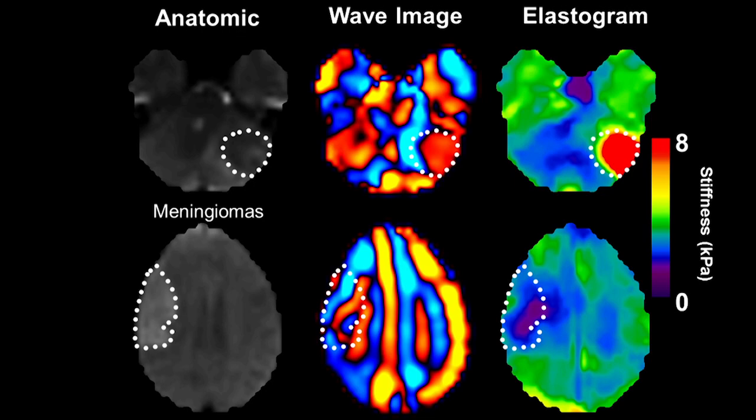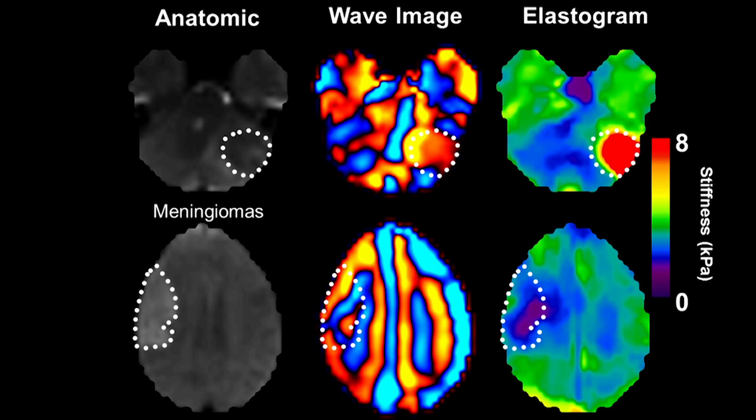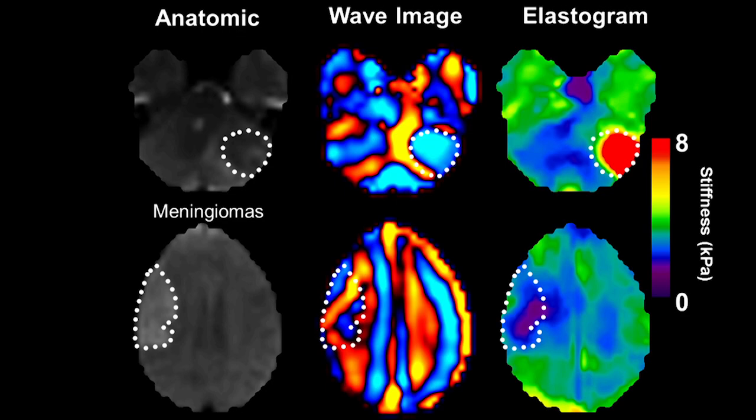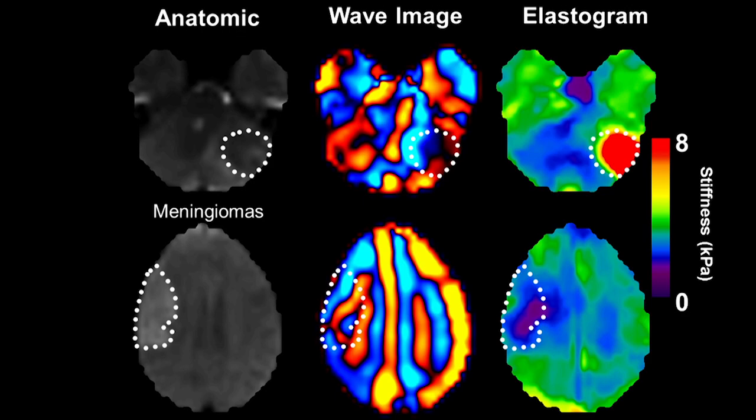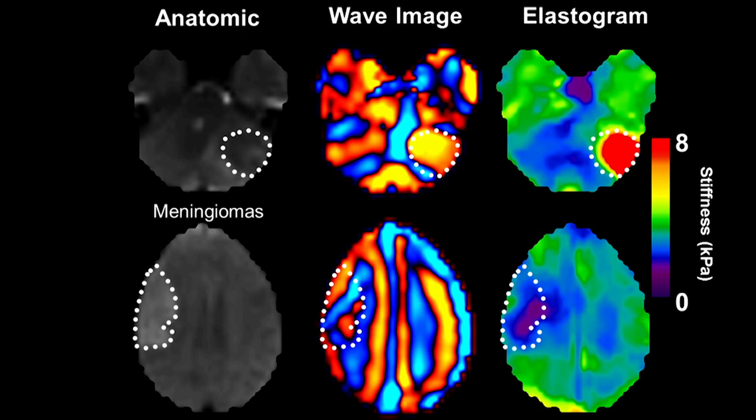Dr. John Huston III and his colleagues have used this imaging modality in various diseases. For example, it can be used to differentiate hard and soft tumors, which can provide diagnostic information and also help neurosurgeons in their surgical approach. Here, the upper images are of a stiff meningioma, shown in red, where the wave image in the middle has a longer wavelength. The bottom is of a soft meningioma, which is actually softer than normal brain, and you can see on the map that it's actually blue.